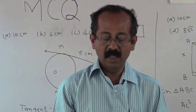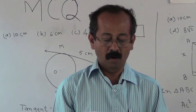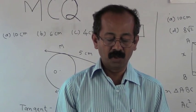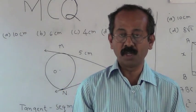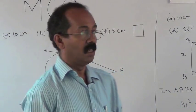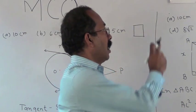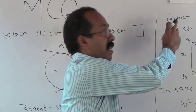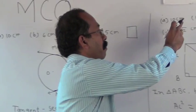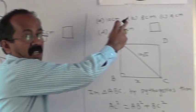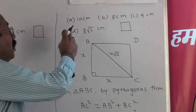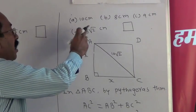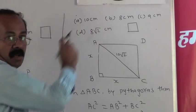Example 4: What is the length of the side of a square whose diagonal is 10√2 centimeters? The alternatives are: A) 10 cm, B) 8 cm, C) 9 cm, D) 8√2 cm.